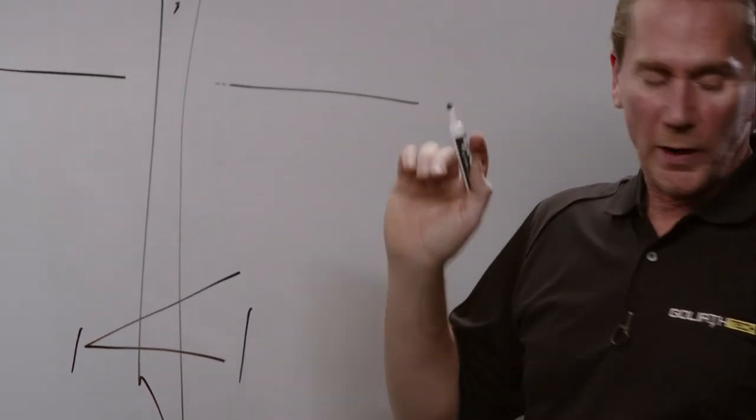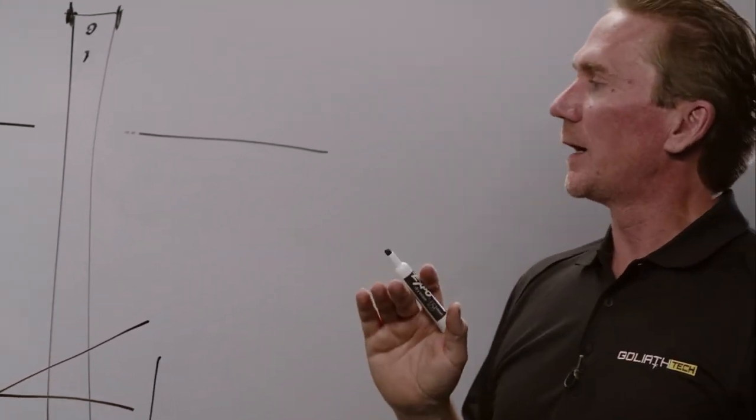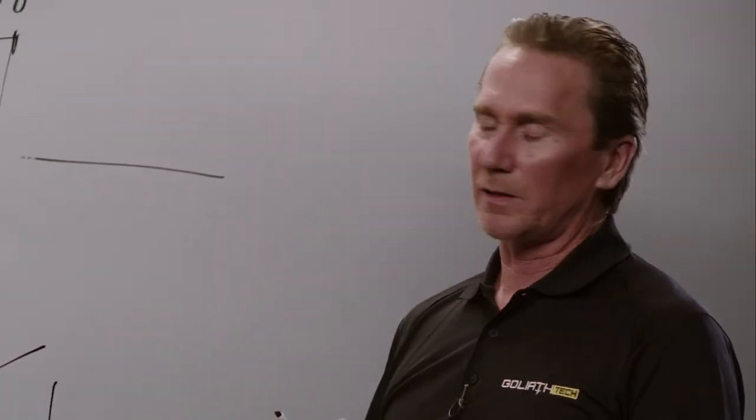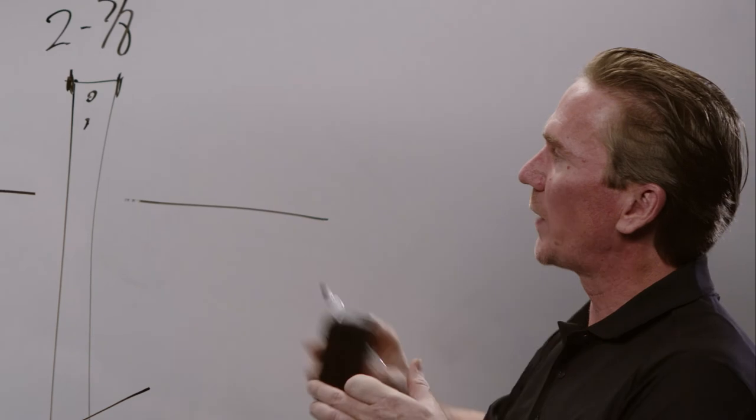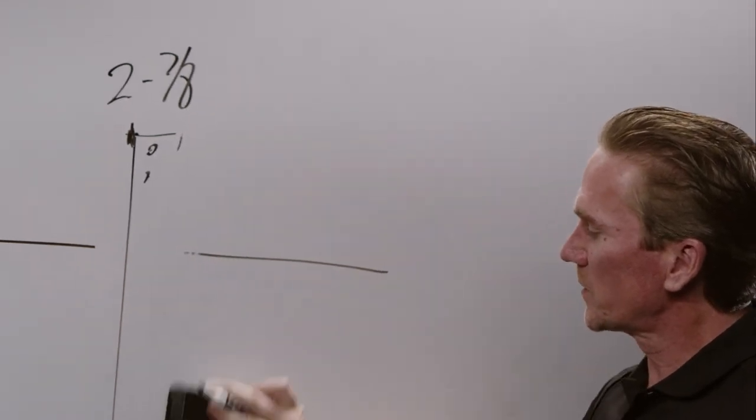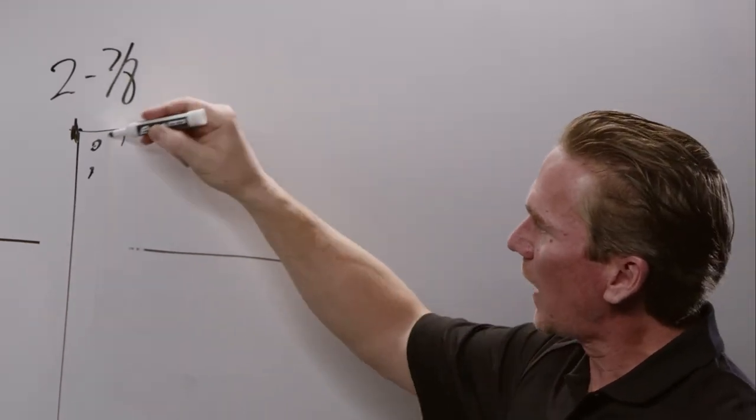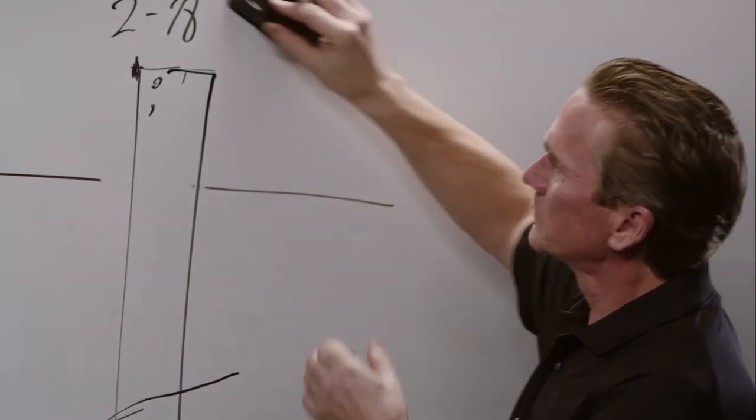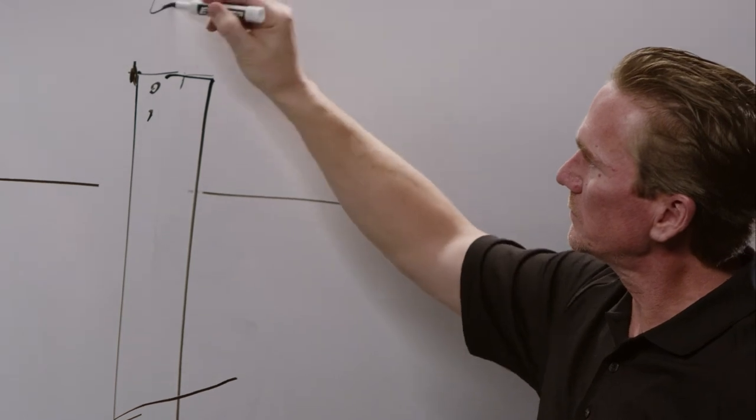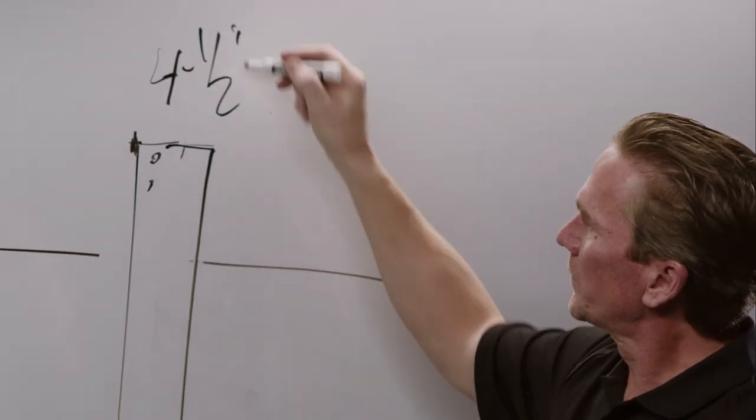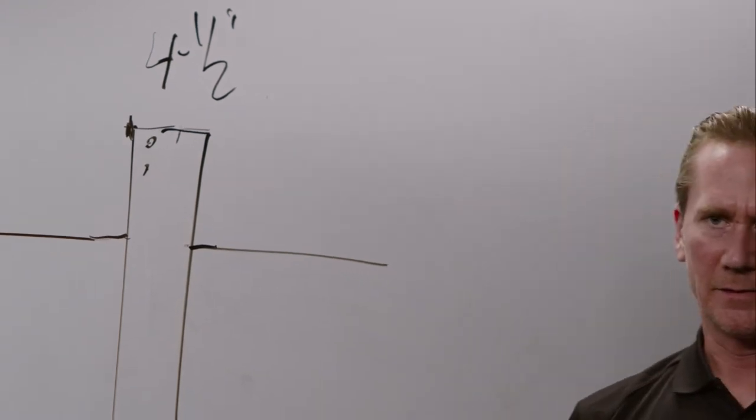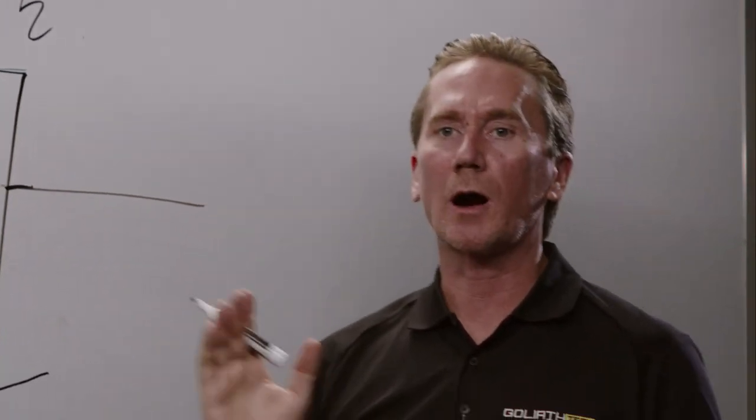So one of the ways to combat lateral strength or lateral limits in weak soil is we go to a larger pile. So in this case, if we went to for instance a four and a half inch pile, we have a lot more contact on the soil itself. It's much harder to push over.